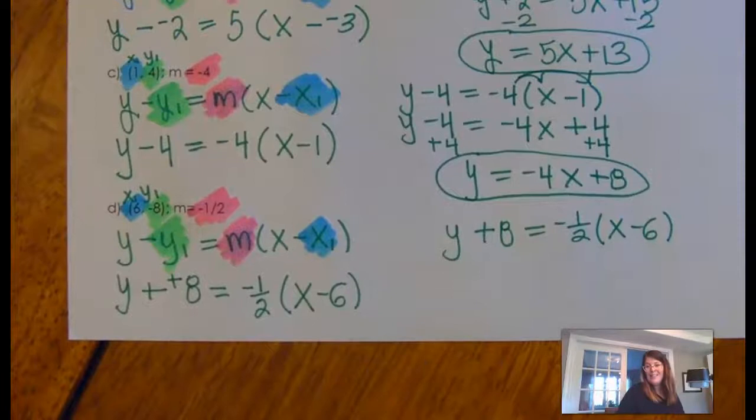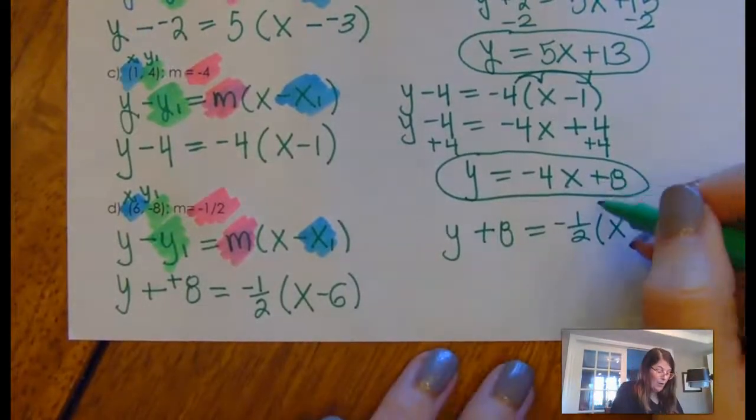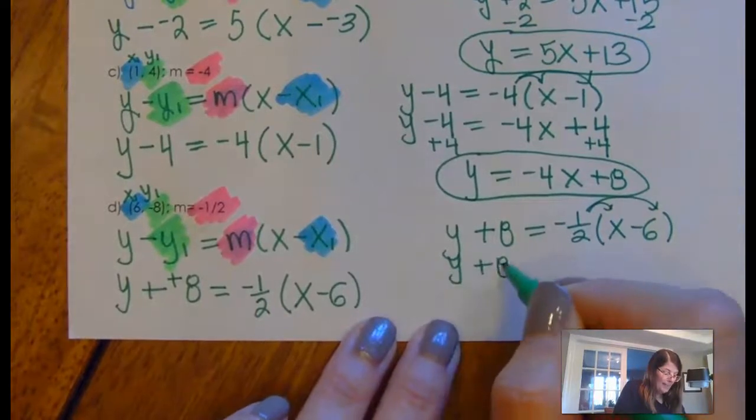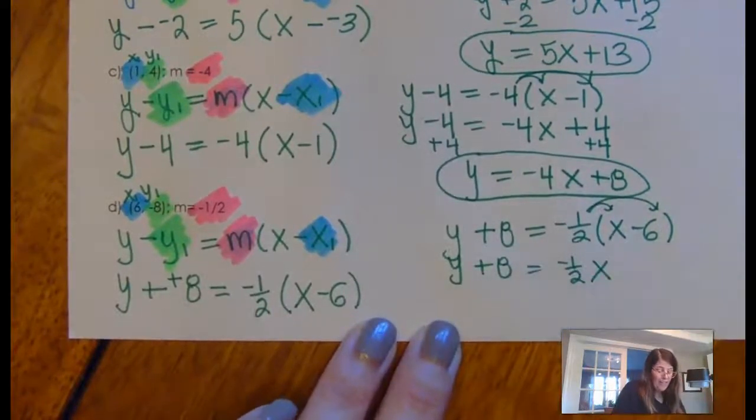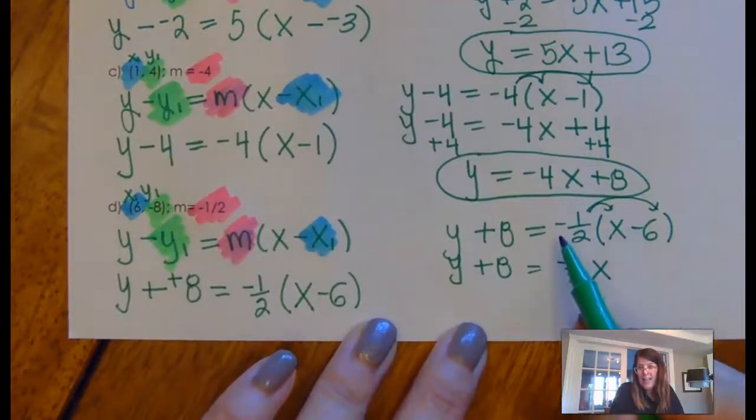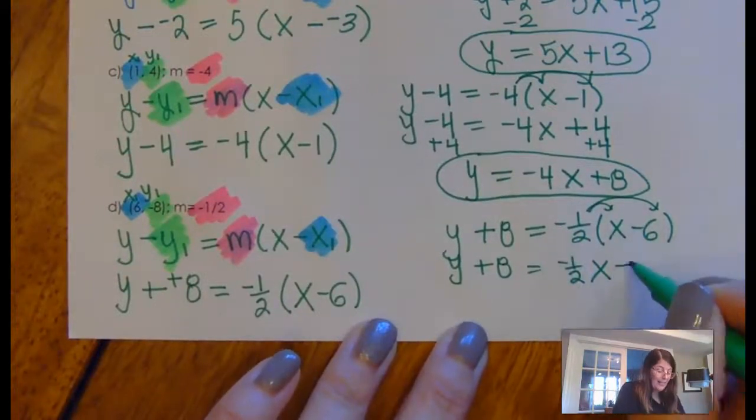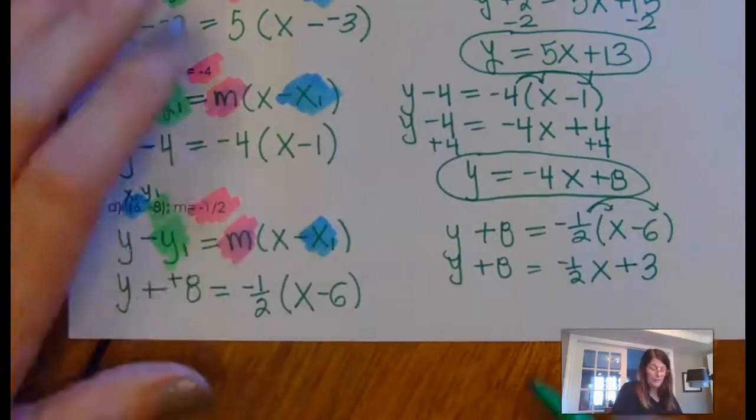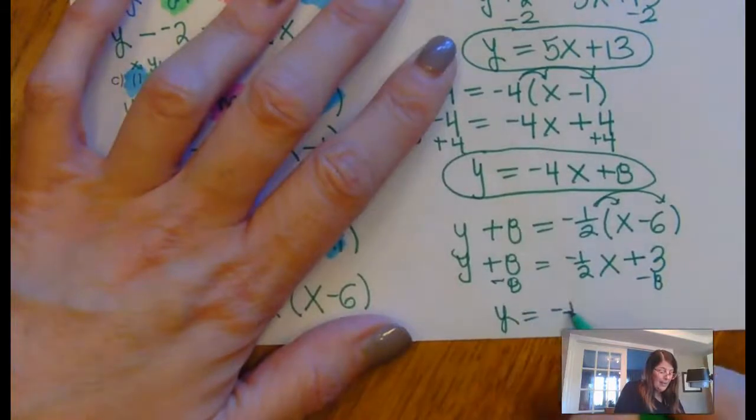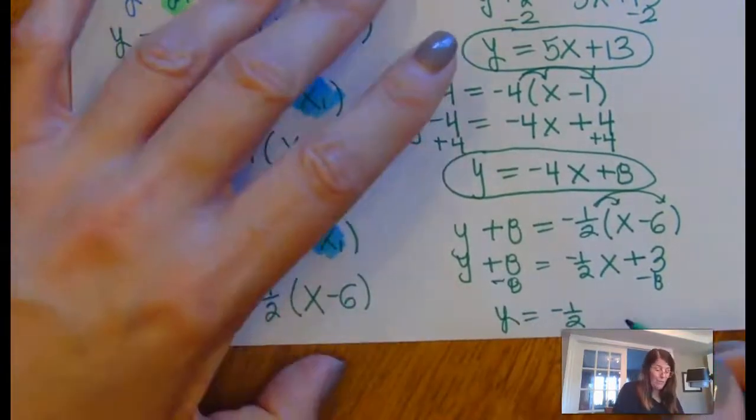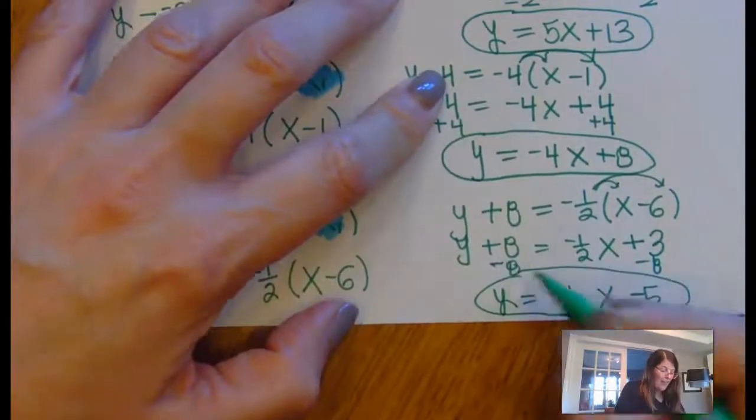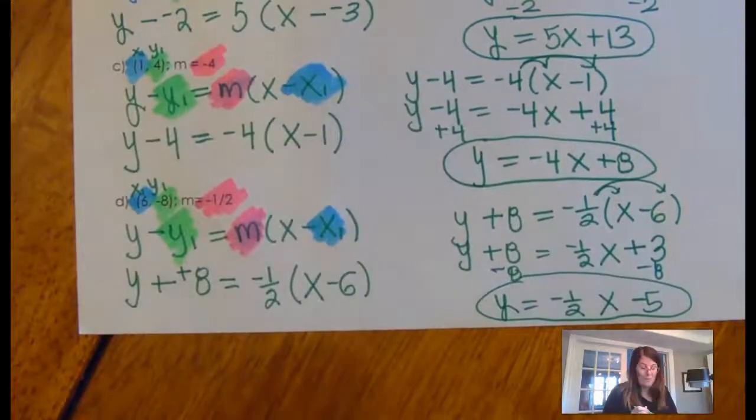So, now, I have to put this into slope intercept form. So, I'm going to start by distributing. Y plus 8 is negative 1 half X. Half of 6 is 3. Negative 1 half times negative 6 is a positive 3. Then, I move that 8 over. And I get my equation is Y equals negative 1 half X minus 5. Now, I've got that in slope intercept form.